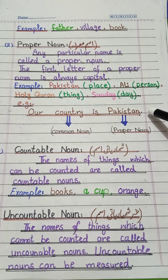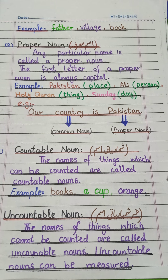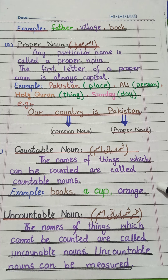Our third kind is countable noun. The nouns which can be counted are called countable nouns. Examples: books, cup, orange. When we write their singular form, we use 'a' or 'an' with singular countable nouns.